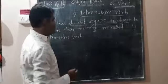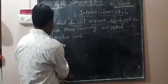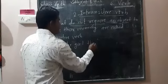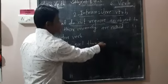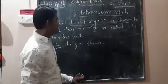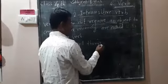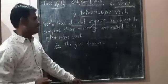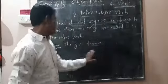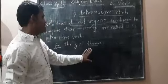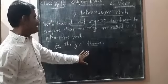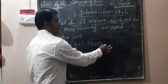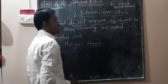Example: 'The girl throws.' Here, throw is a verb, and there is no object given in this sentence. 'The girl throws' is a complete sentence. No object is given here, so it is an intransitive verb.